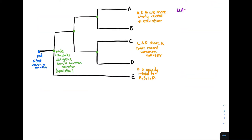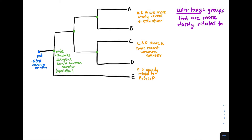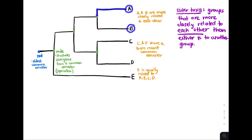Let's review some key vocabulary. Sister taxa — what are sister taxa? Sister taxa are groups that are more closely related to each other than either is to any other group on the phylogenetic tree. For example, A is more closely related to B, so A and B are sister taxa because they share a more recent common ancestor than either does to any other group on the tree.